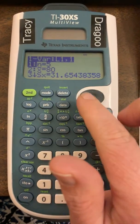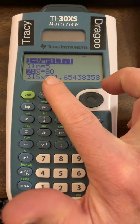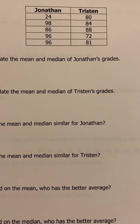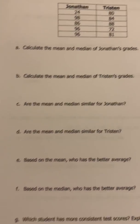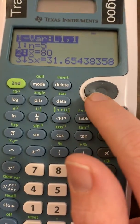Now it gives you a lot more than what you need. The second line gives you the mean value. So for Jonathan, remember we entered him in this column, his mean value is 80. The X with the bar over it stands for the mean value.